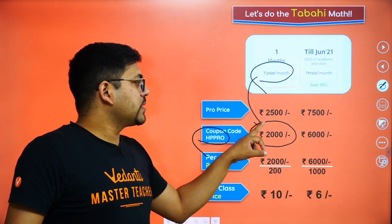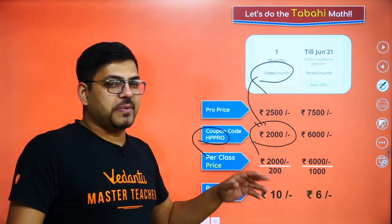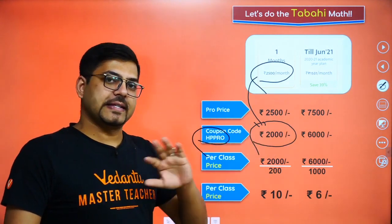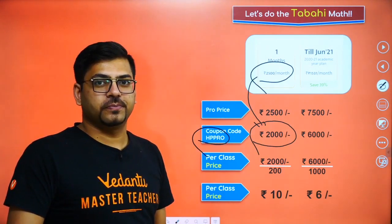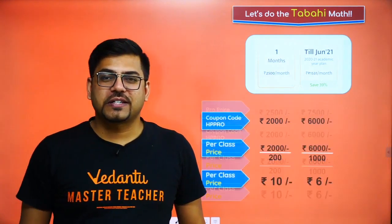This 2,500 will be reduced to 2,000 if you use coupon code HP Pro. With HP Pro, 2,500 will become 2,000. In this 2,000, you will have Physics, Chemistry, Maths, Bio, Social Science, English. Isn't that great?